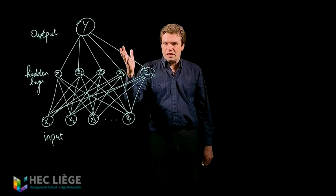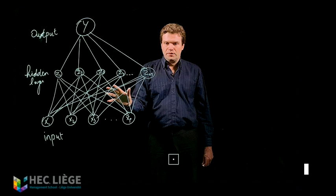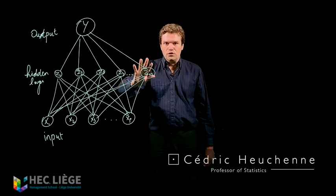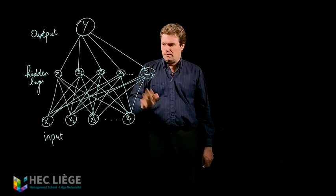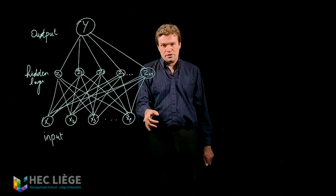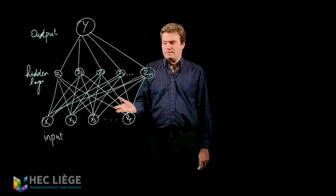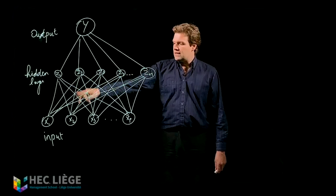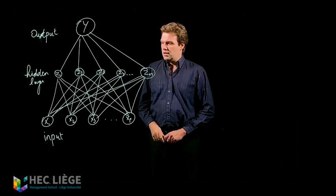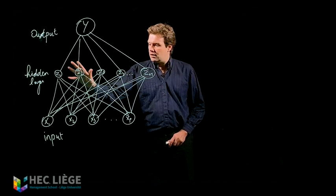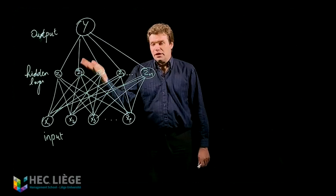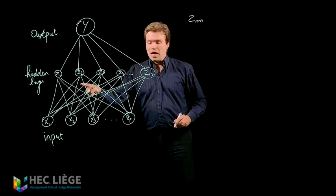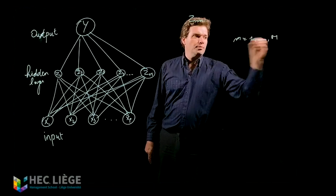That is the basic scheme of a neural network. How is it possible to understand mathematically the connections and the neurons that lie in this scheme? We have here x1 to xp, corresponding to the different covariates. These different covariates are all linked to other neurons z1 to zm that lie in the hidden layer. We are going to provide equations corresponding to this representation — that means we have zm for m equals 1 up to capital M.